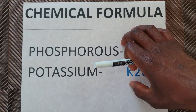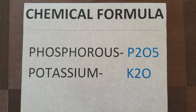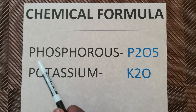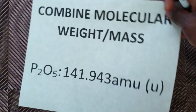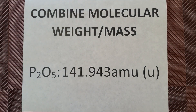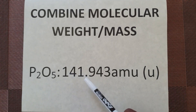Please remember that we are not going to be using nitrogen because nitrogen represents the true percentage value within the bag. So what we are interested in is phosphorus and potassium. The chemical formula for phosphorus is P2O5 and the chemical formula for potassium is K2O. In order to find the amount of phosphorus that is in the fertilizer bag, we first need to know the combined molecular mass of P2O5, which is 141.943.